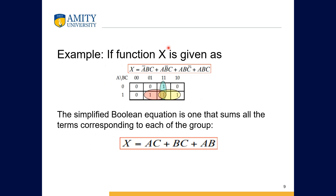To understand how K-maps work, consider function X = A-not BC + AB-not C + ABC-not + ABC. Each term gives the values of A, B, C where X is one. Since there are three variables, we make a three-variable K-map. We number the cells and fill in a one for each term: A-not BC means A is zero, B and C are one, so that goes in the first row, third column.